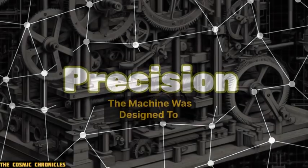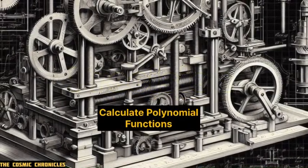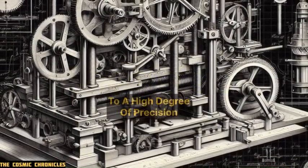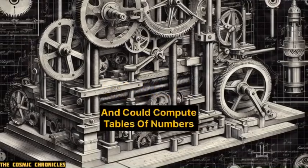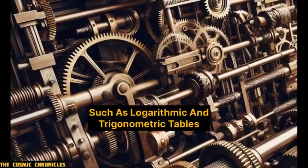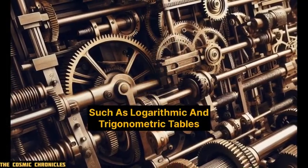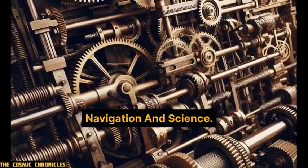Precision. The machine was designed to calculate polynomial functions to a high degree of precision and could compute tables of numbers, such as logarithmic and trigonometric tables, which were essential for navigation and science.